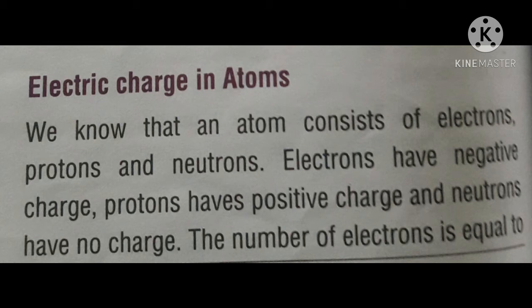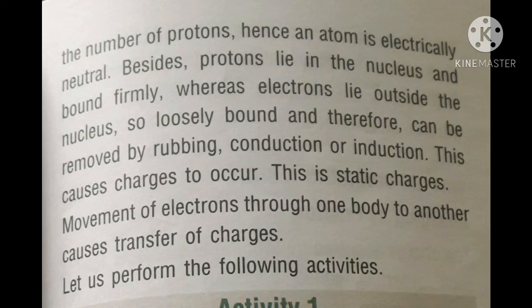Protons and neutrons are present inside the nucleus of an atom, and electrons revolve in fixed orbits. The number of electrons is equal to the number of protons, hence an atom is electrically neutral. Protons are firmly bound inside the nucleus, whereas electrons lie outside the nucleus and are loosely bound.